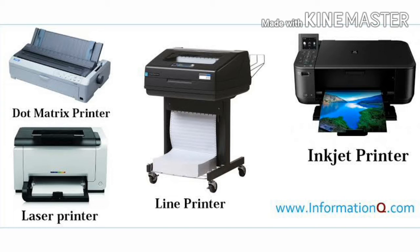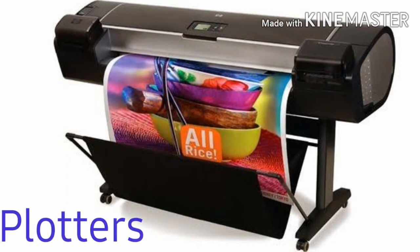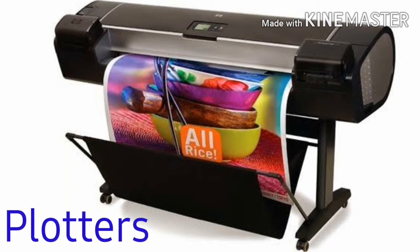Printers. A printer is a peripheral device used for printing the output on paper or any other printable media. The printed formation on the paper is called a hard copy. There are two types of printers: Impact printer and Non-impact printer. Plotter. A plotter is a vector graphic printing device which interprets commands from a computer to make line drawings on paper with one or more automated pens.